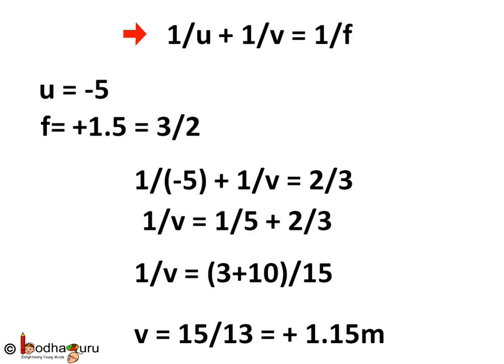We know 1/u + 1/v = 1/f for spherical mirrors. So u is equal to minus 5 meter, negative because it is left of P, and f is equal to 1.5 meter because convex mirror makes virtual image on the other side of the mirror. So f would be measured in the direction of incident ray. So f is positive 1.5 meter.